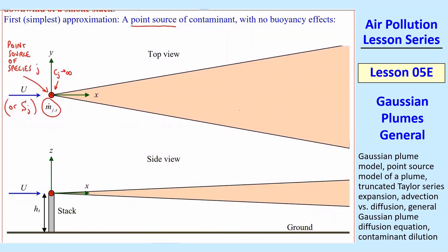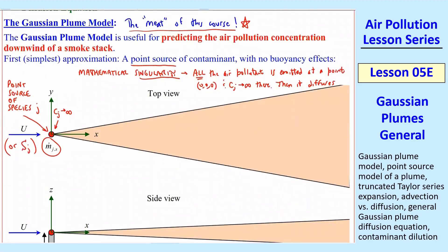We're going to have some point source at the origin. So here's the origin, X, Z, and Y is into the page here, and here's a side view and a top view of some smokestack. We're ignoring buoyancy in this case, so the smoke is just coming out horizontally, and we have a point source. Mathematically that's a singularity because all the air pollutant is emitted at one point. All the air pollutant is emitted at a point. That point happens to be the origin. C_j is infinity there, and then it diffuses. We have this source, point source, m dot j,s, which has dimensions of mass per time.